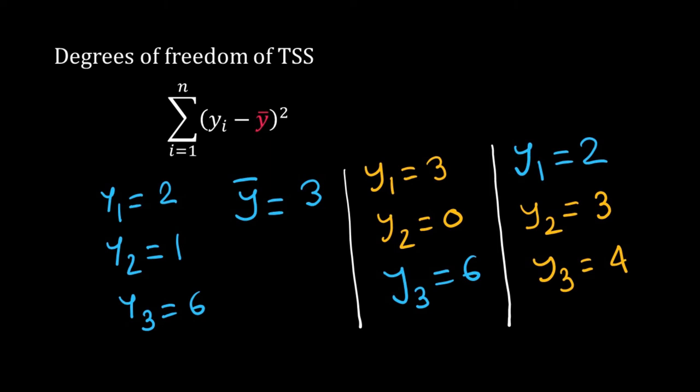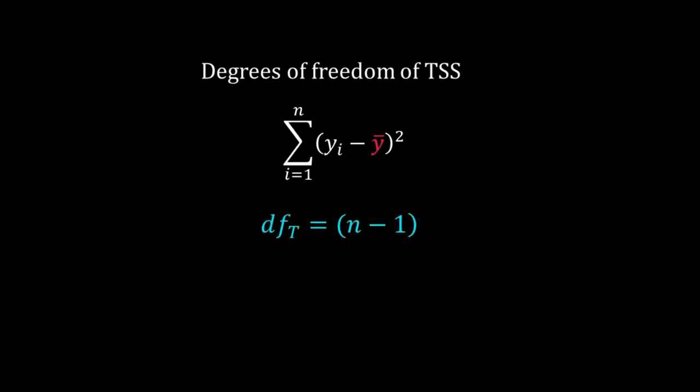I cannot change all the y's. I can change only 2. In general, when n is the number of y, degrees of freedom is n minus 1. So the degrees of freedom of TSS is n minus 1 where n is the number of data points.